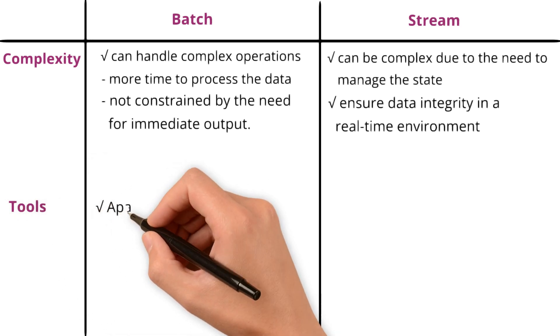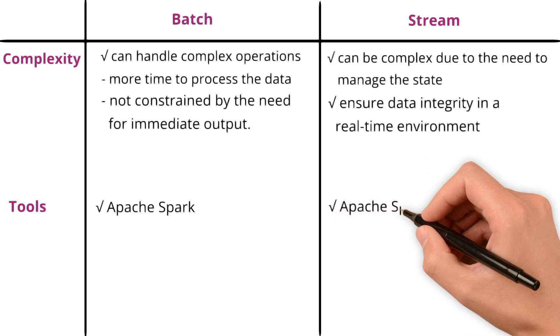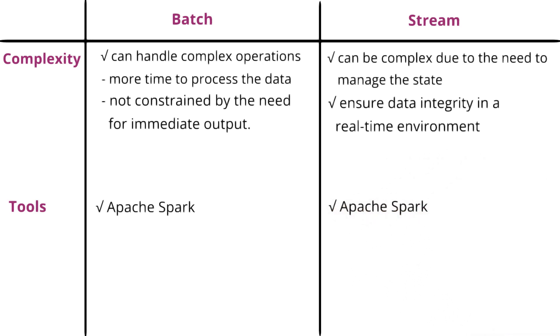Tools. Tools like Apache Spark can handle both batch and stream processing. They are fundamentally different in their operation, with stream processing being a continuous process and batch processing being an intermittent one.